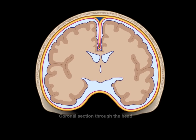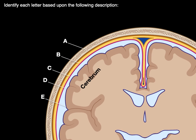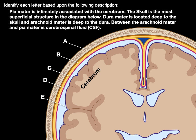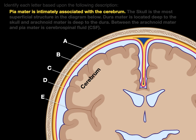Here's a coronal section through the head. I want you to identify each letter based on the following description — pause and figure out what all the letters are. The pia mater is intimately associated with the cerebrum. There's the cerebrum, and there's the pia mater.